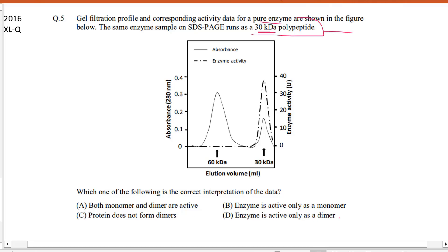D: enzyme is only active as a dimer. So what do you mean by the proteins are active? That is, if they have enzymatic activity, then we say that the proteins are active. So first option, both the monomer and dimer are active.